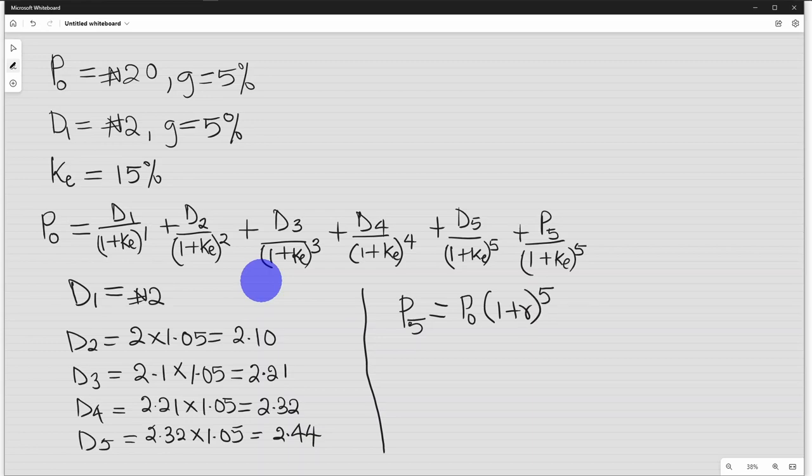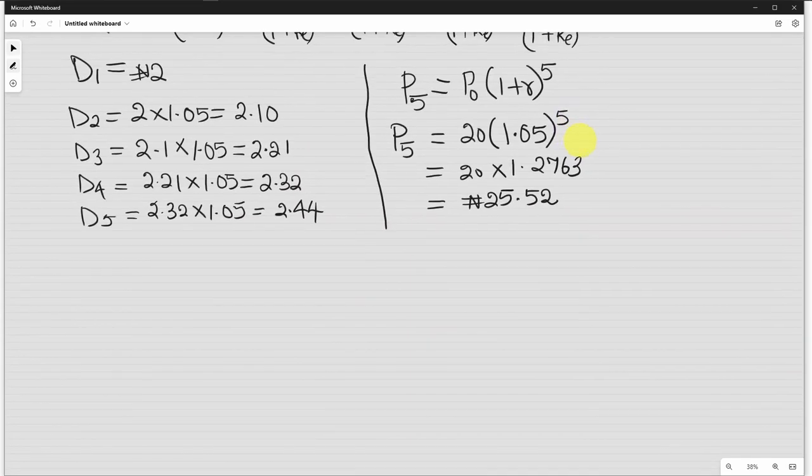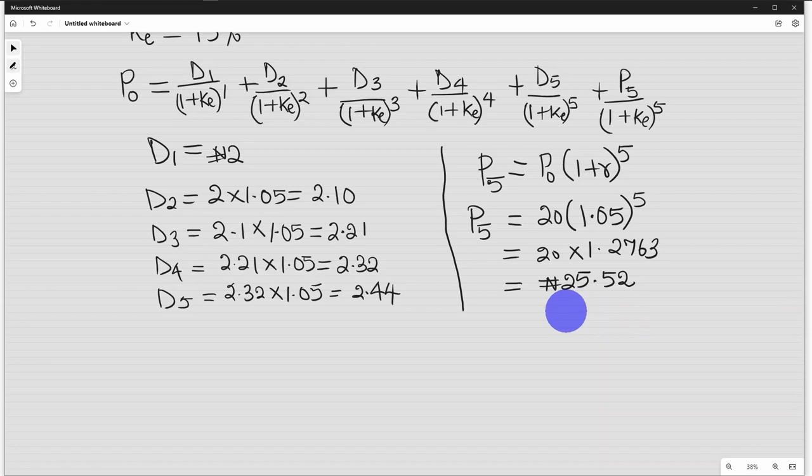If we use the future value formula, P5 will be P0 into 1 plus R raised to power 5. So, our R is the increment, that is the 5% that they say is going to increase. So, we have P5 will be equals to P0 is 20 into 1 plus 5%, that is 1.05 raised to power 5. So, that is 20 times 1.276. When we multiply it well, that will give us 25.52 in 5 years from now. With this information, if we put it in our formula, which is here,